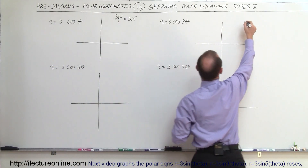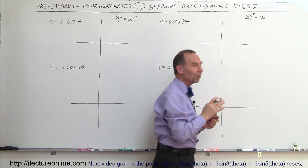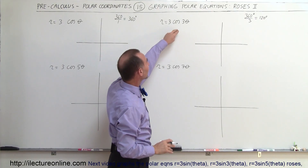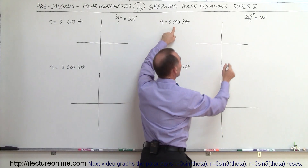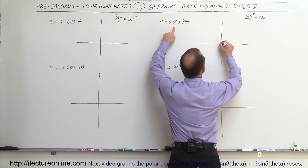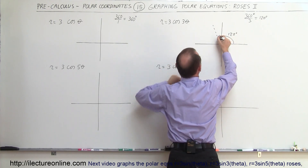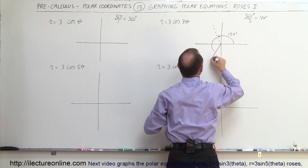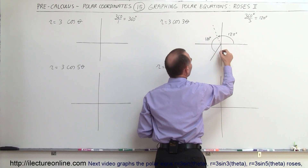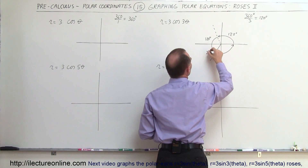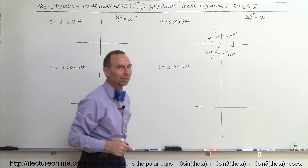For the 3-leaf case, we take 360 degrees divided by 3 and get 120 degrees. That means every 120 degrees we're going to have a leaf, starting at theta equals 0 — because when the angle is 0, the cosine is 1. So we'll have a leaf at 0 degrees, a leaf at 120 degrees, and another leaf at 240 degrees. That gives us 1, 2, 3 leaves on that particular graph.